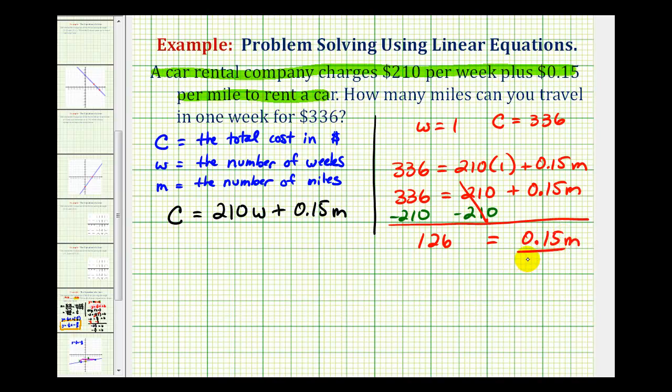So now we'll divide both sides by 0.15 to solve for M. So this would be M. And then this quotient will tell us how many miles you can drive. So we'd have 126 divided by 0.15.